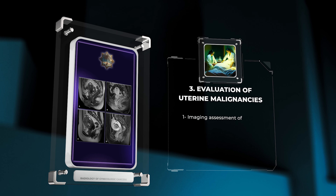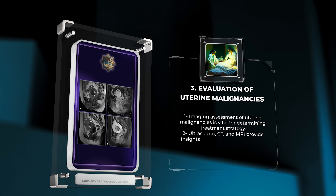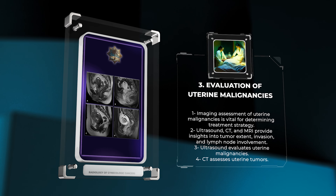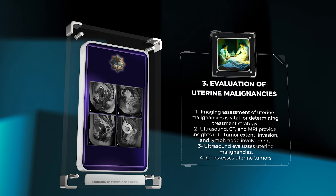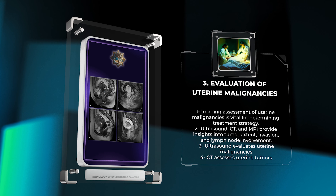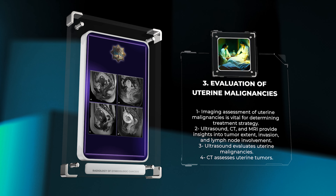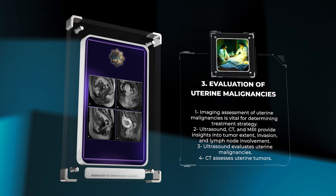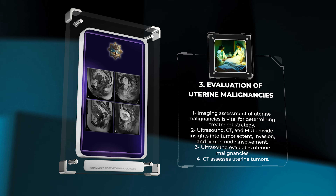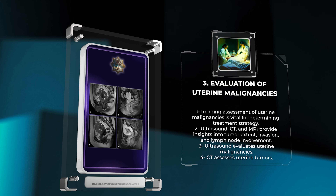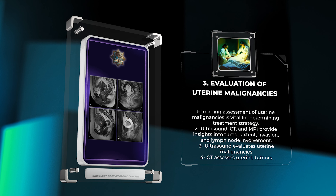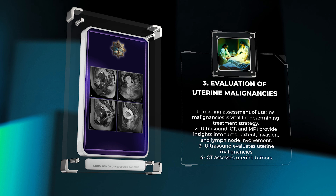The imaging assessment of uterine malignancies plays a vital role in determining the appropriate treatment strategy. Modalities such as ultrasound, CT, and MRI offer valuable insights into tumor extent, invasion of adjacent structures, and lymph node involvement. Ultrasound, CT, and MRI each provide specific features that aid in the evaluation of uterine malignancies.